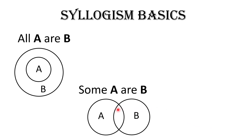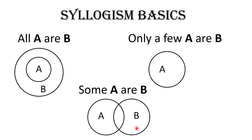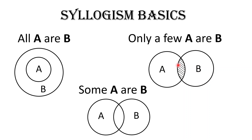The third statement type is: Only a few A are B. It will be denoted similarly to 'Some A are B,' so to differentiate between the two diagrams, I have drawn a zigzag pattern in the common portion of A and B. You can draw any pattern you like, just to differentiate 'only a few A are B' from 'some A are B.'